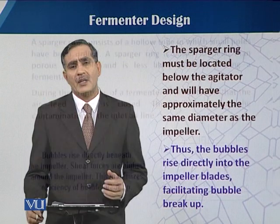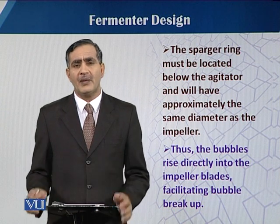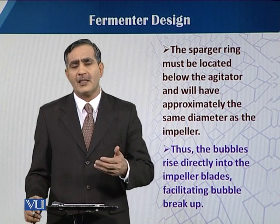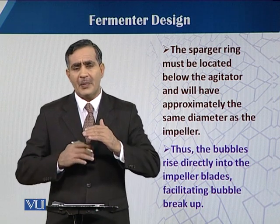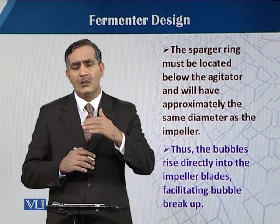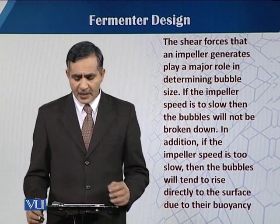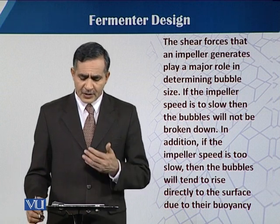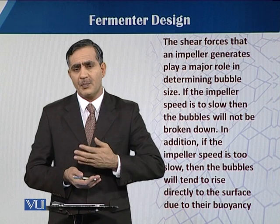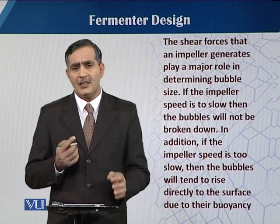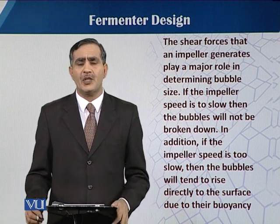The sparger ring should be situated exactly below the impeller. This helps to have direct contact with the air bubbles and facilitates the breakdown of those bubbles into smaller sizes — that is the role of placing the sparger just below the impellers. The shear forces that an impeller generates play a major role in determining the bubble size, and the distance from the sparger to the impeller as well as the speed of the impeller also affect bubble size and distribution.